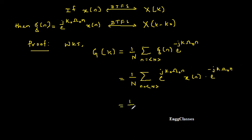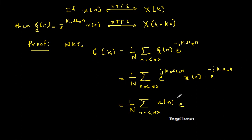So I write 1 over N, summation over the range capital N, of x of n times e to the power minus j omega-naught n, with the common term j omega-naught n combined. Taking j omega-naught n as the common term, I am left with k minus k-naught in the exponent. So the expression becomes 1 over N, summation of x of n times e to the power minus j open-parenthesis k minus k-naught close-parenthesis omega-naught n.